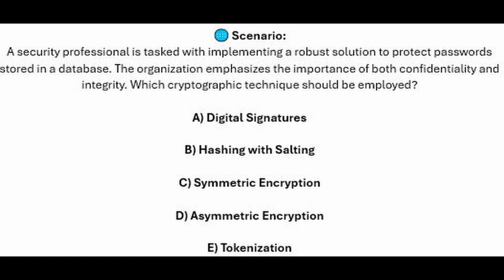Is it A, digital signatures? Is it B, hashing with salting? Is it C, symmetric encryption? Is it D, asymmetric encryption? Or is it E, tokenization?